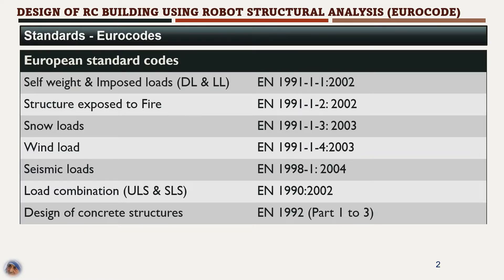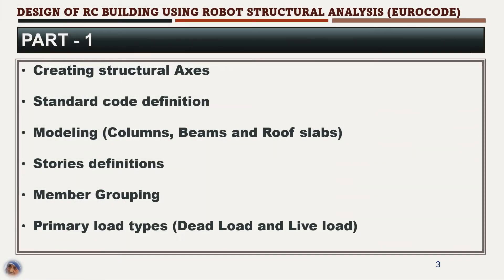EN 1990 (2002). Design of concrete structures: EN 1992 Part 1-2-3. This module on design of a reinforced concrete building using Robot Structural Analysis with the European code is divided into three parts. In the first part we are going to see how to create structural axes, standard code definitions, modeling of columns, beams and roof slabs, stories definition — which is very important when designing a multi-story building — member grouping, and the primary load types considering dead load and live load.